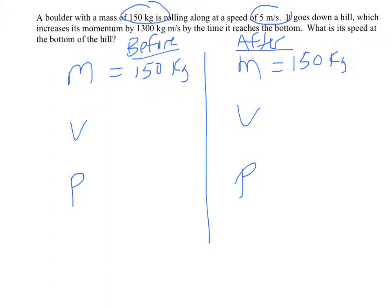But it's rolling along at a speed of 5 meters per second, and then it goes down a hill. So it starts at 5 meters per second, then it goes down the hill, and we know at the bottom of the hill its momentum increases by a certain amount. But ultimately our goal is to find the speed at the bottom of the hill.